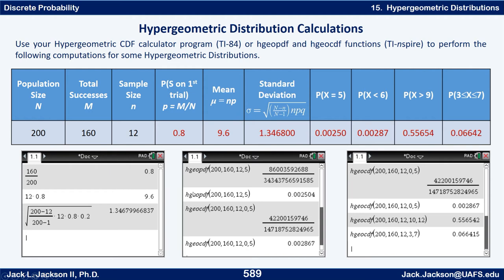In a similar way you can put in hgocdf and the order goes in population size, number of successes in the population, sample size, and then lower and upper limits on the x values.